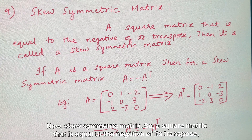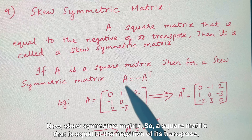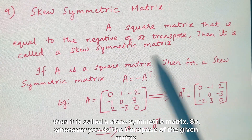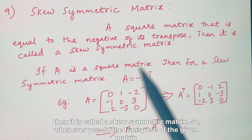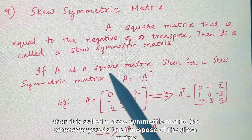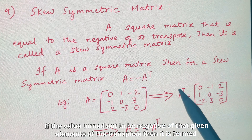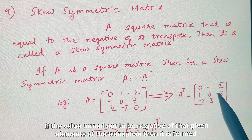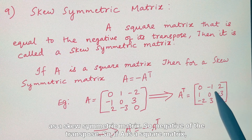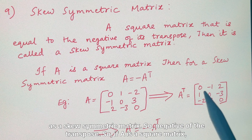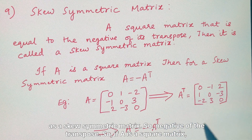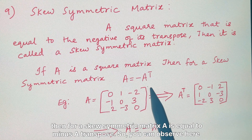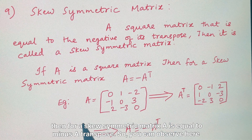The ninth type is a skew symmetric matrix — a square matrix that is equal to the negative of its transpose is called a skew symmetric matrix. When you take the transpose of the given matrix, if the values turn out to be the negatives of the original elements, then it is termed a skew symmetric matrix. The condition is A = -A^T.